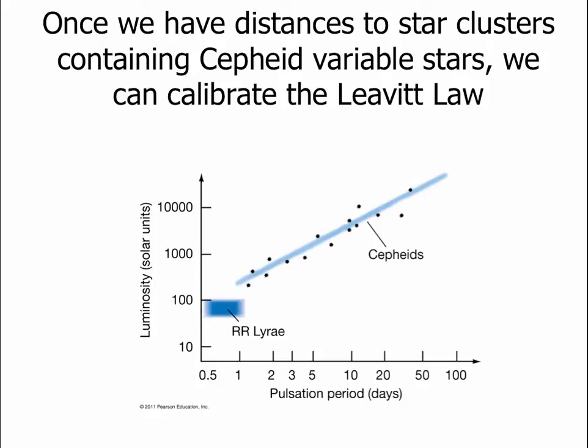Once we have star cluster distances, in some of those clusters we find Cepheid variable stars and RR Lyrae stars. We can use those to calibrate the Leavitt Law, because now we have Cepheids and RR Lyraes whose periods we can measure in clusters whose distances we already know. Since we know the distances, we can calibrate their luminosities. Then when we look at more distant objects where we can still see Cepheids or RR Lyraes but can no longer see the main sequence, we can still use this method to get distances.